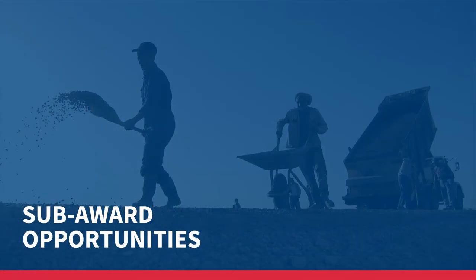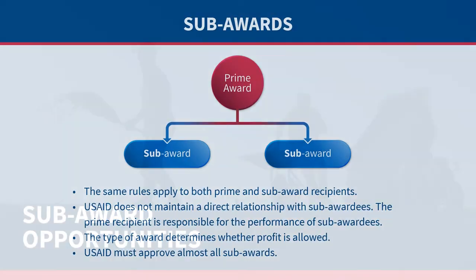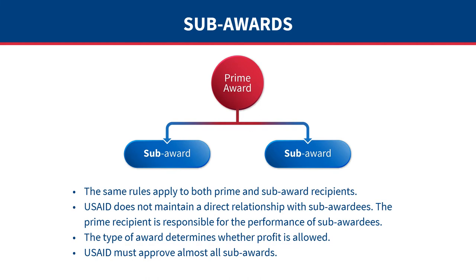In this next section, we will review sub-award opportunities for both acquisition and assistance funding opportunities. These are important for new partners because many partners begin working with USAID as sub-awardees of prime awards. In general terms, a sub-award goes to a partner implementing an activity under the direction of a USAID prime award recipient. It is important to note that USAID does not maintain a direct relationship with sub-awardees — the prime recipient is responsible for the performance of sub-awardees and is accountable to the agency.